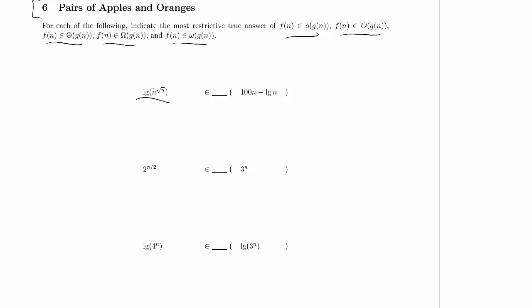We've got log of n to the square root of n. The first thing we should do is take that power of square root of n out, so we get square root of n times log of n. Over here we've got 100n minus log of n, but n asymptotically dominates log of n, so this is a low order term — this is just a constant.